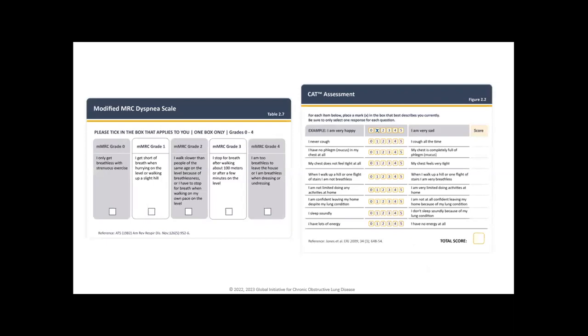In terms of grading dyspnea, we're all familiar with the MMRC or Modified Medical Research Council dyspnea score and the COPD assessment tool. I prefer the MMRC, it's easier in a clinical setting. The CAT assessment is better because it gives a more holistic view, looking at sleep, energy, and psychological factors like confidence leaving home. However, this needs to be given to the patient before the consultation.